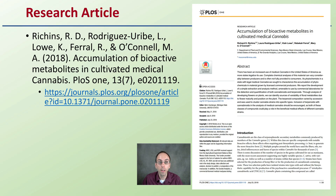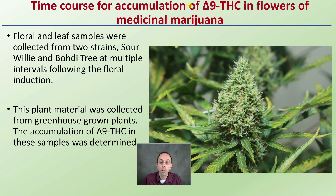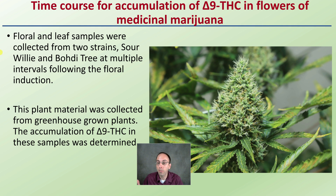This is the research article that I'm basing the information on, so welcome to take a look at it — just providing a brief summary here. The time course for accumulation of Delta-9 THC in flowers in medical marijuana plants: floral and leaf samples were collected from two strains at multiple intervals during the flower induction stage. This plant material was collected from greenhouse-grown plants, and the accumulation of Delta-9 THC in these samples was determined and is presented here in graphical form.